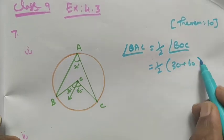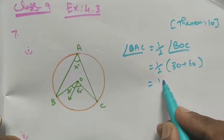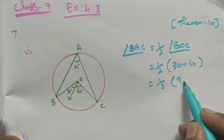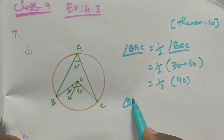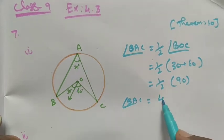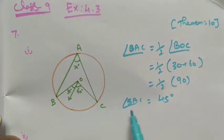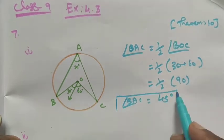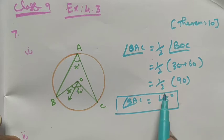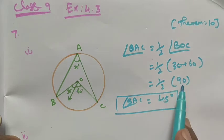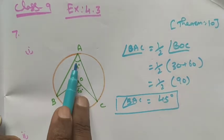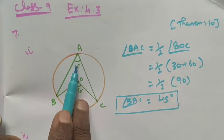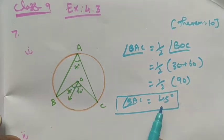60 equals 90 degrees. Therefore, angle BAC is equal to half of 90, which is 45 degrees. So x equals 45 degrees.